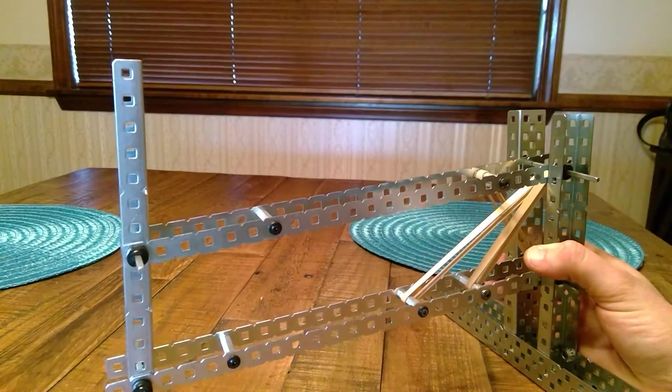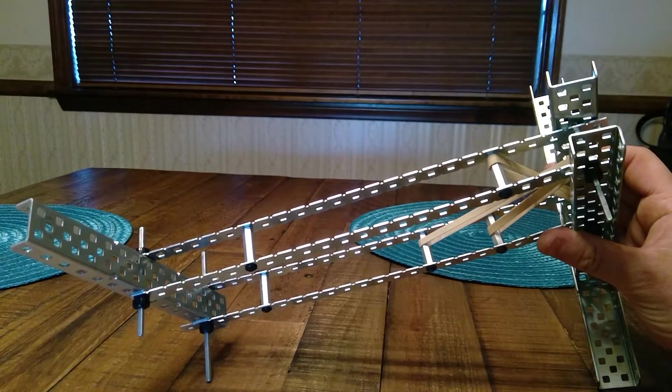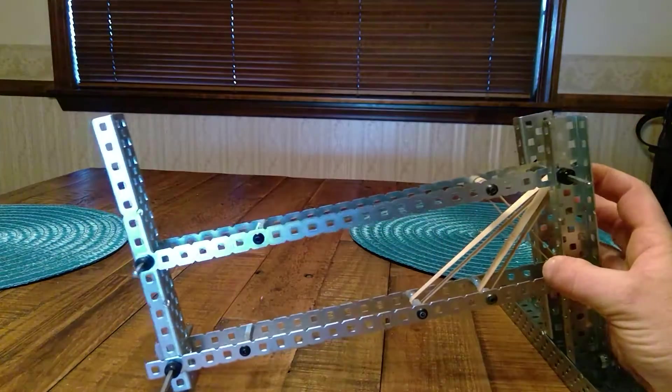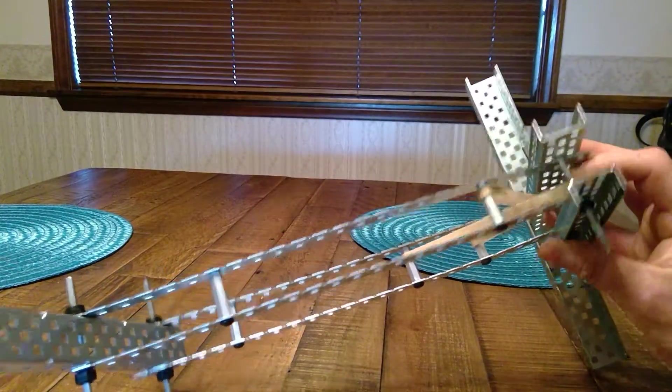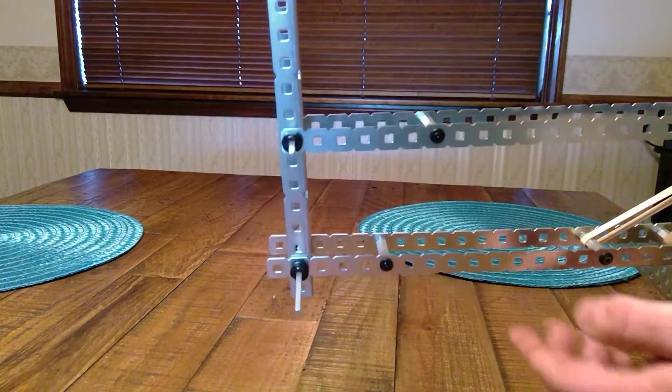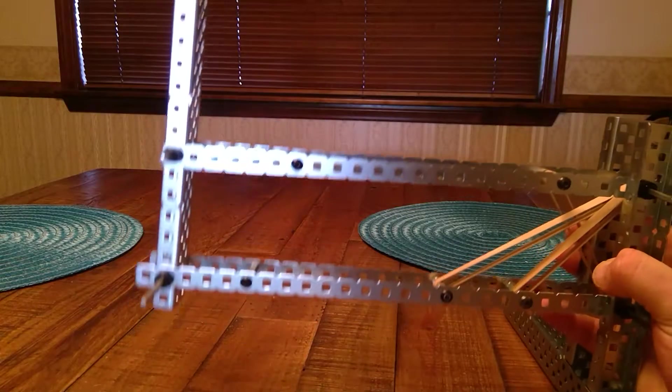So we put this together with three pieces of C-channel, although you can use other pieces as you see fit. We've got these one-bys here and then we've connected them using some standoffs. I put three on the bottom because I needed an extra one to attach that extra rubber band to.